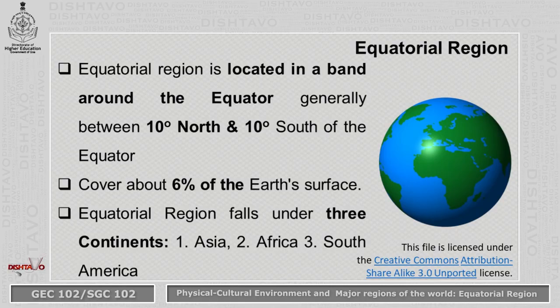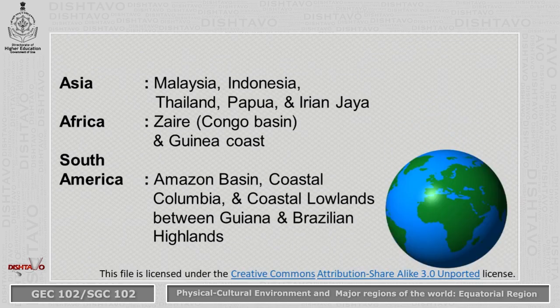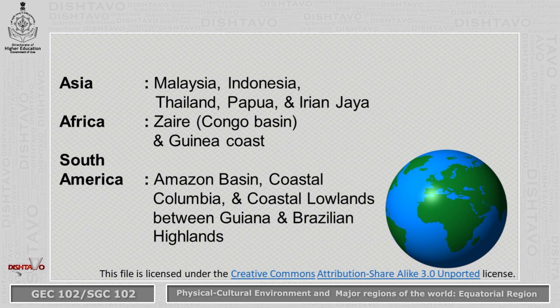In terms of geographical expanse, the equatorial region covers about 6% of the total geographical surface of the earth. It is found in three continents: Asia, Africa, and South America. In Asia, the most prominent countries are Malaysia, Indonesia, Thailand, Papua, and Irian Jaya. In Africa, it is Zaire — basically the Congo Basin — and the Guinea Coast. In South America, it consists of the Amazon Basin, coastal Colombia, and coastal lowlands between the Guiana and Brazilian Highlands.